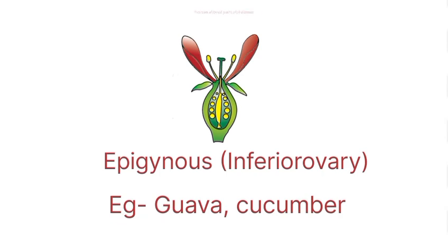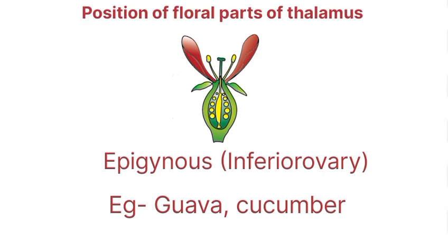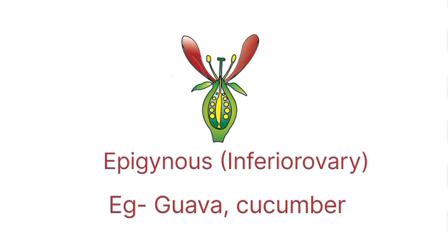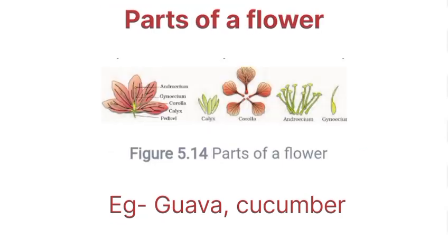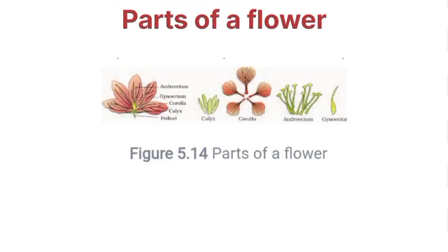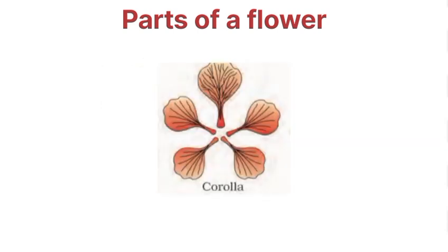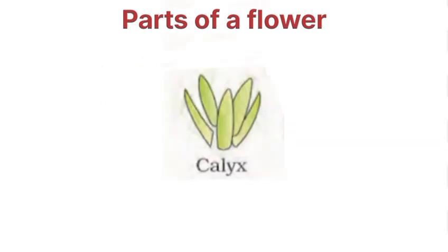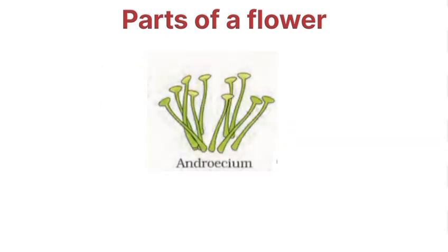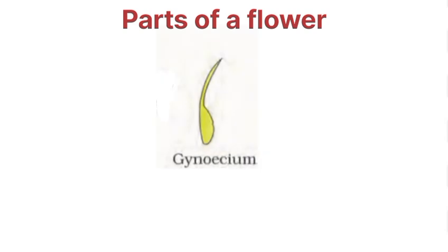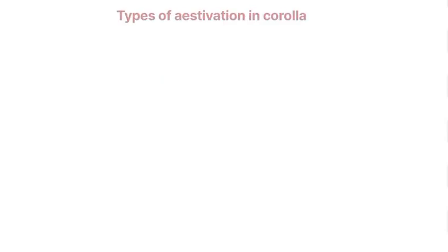Next is epigynous — inferior ovary, examples are guava and cucumber. Parts of a flower: calyx, corolla, androecium, gynoecium.